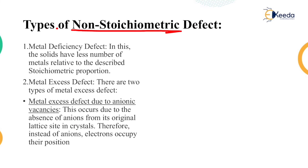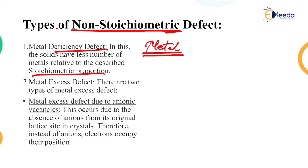Now the types of non-stoichiometric defects. The first is metal deficiency defect. In this, the solids have a lesser number of metals relative to the stoichiometric proportions. So if a particular metal or alloy has some particular proportion and there are fewer atoms or ions, it is considered a metal deficiency defect.